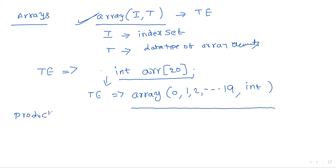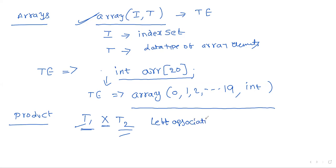The next type constructor is product, in the sense of Cartesian product. If t1 and t2 are two data types, they are represented in the type expression format as t1 × t2. This Cartesian product is left associative. The most important type constructors are arrays, structures, and pointers.